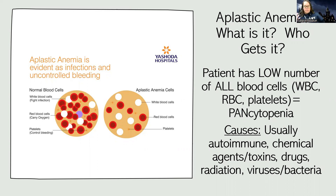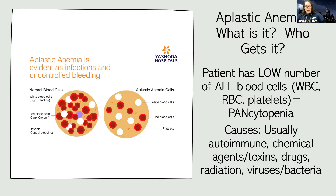Now we're going to get into a different type of disorder where there's not just a low RBC or low hemoglobin. Aplastic anemia is a disease process where there is actually a low number of all your blood cells — low white blood cells, low red blood cells, low platelets — which is referred to as pancytopenia. 'Penia' means small or low, and 'pan' means across everything, so pancytopenia means a low number of all cells.